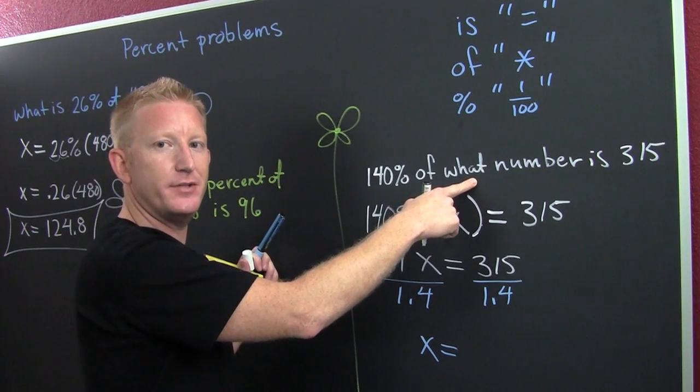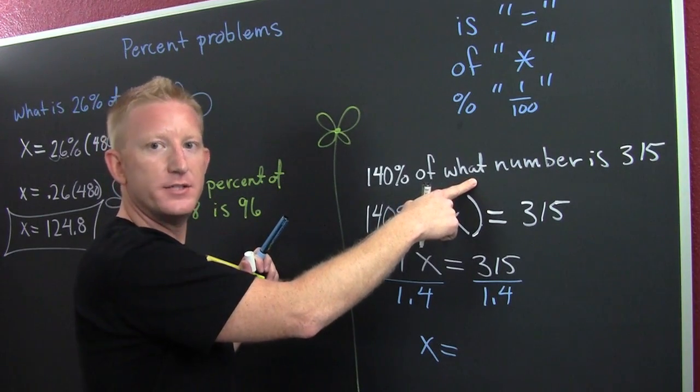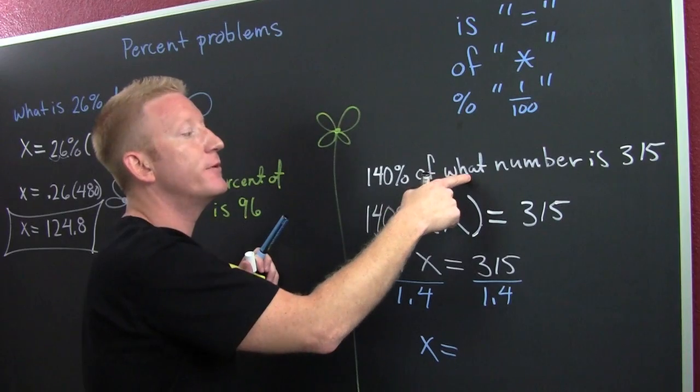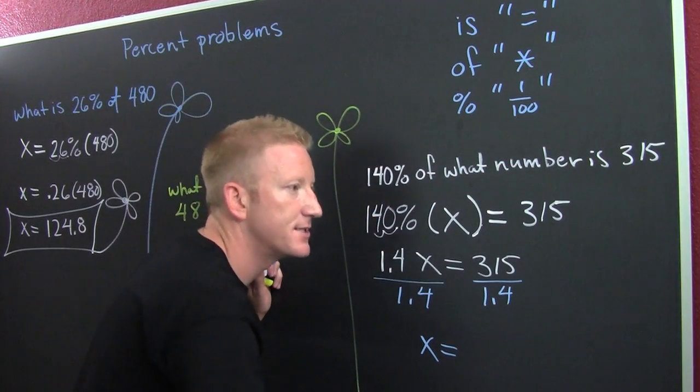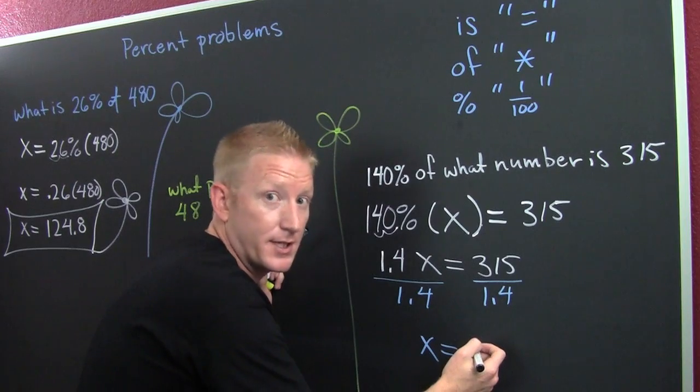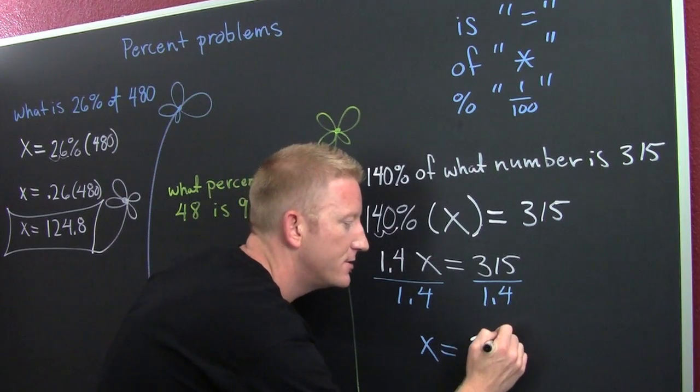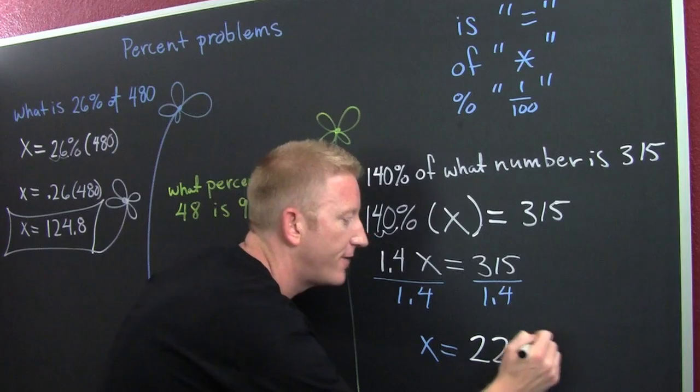1.4 divided by 1.4 and then we pound that out and it turns out that 140% of what number, remember that eBay example I just spewed? Bleah, spewed it all wrong. 140% of what number is 315. This is the discount. So don't discount that last, anyway, just go with it. 225.